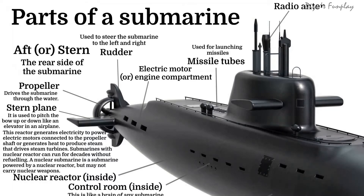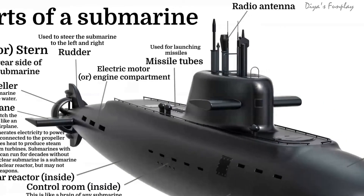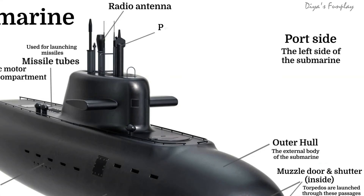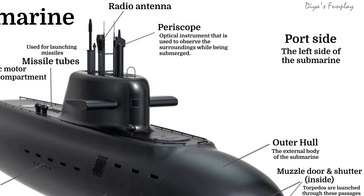Radio antenna. Radio antennas are used for transmission and reception of radio waves by a communication system. Periscope — a periscope is an optical instrument used to observe the surroundings while being submerged.